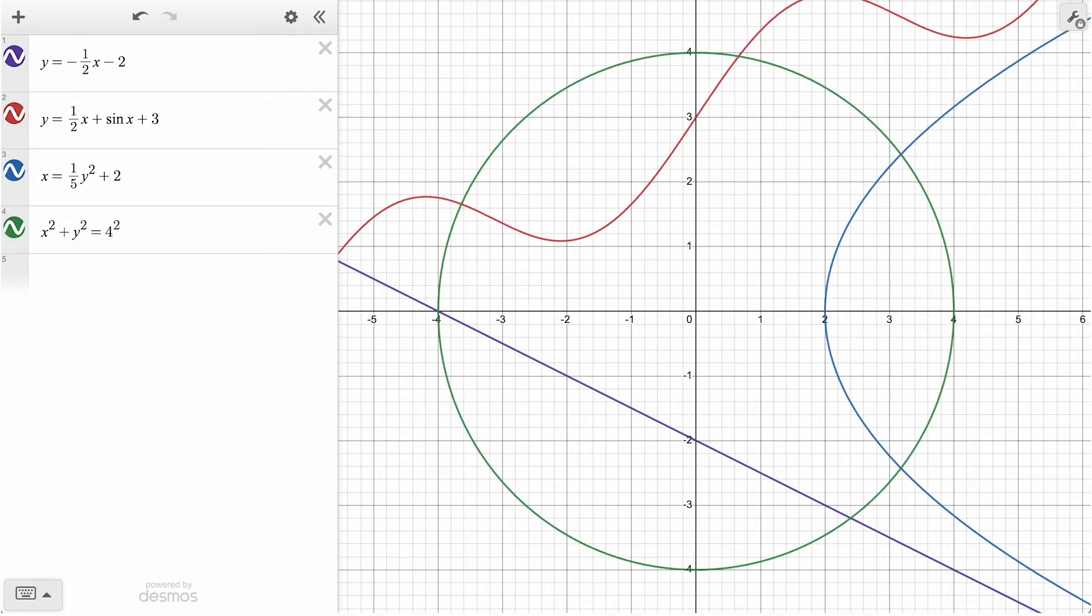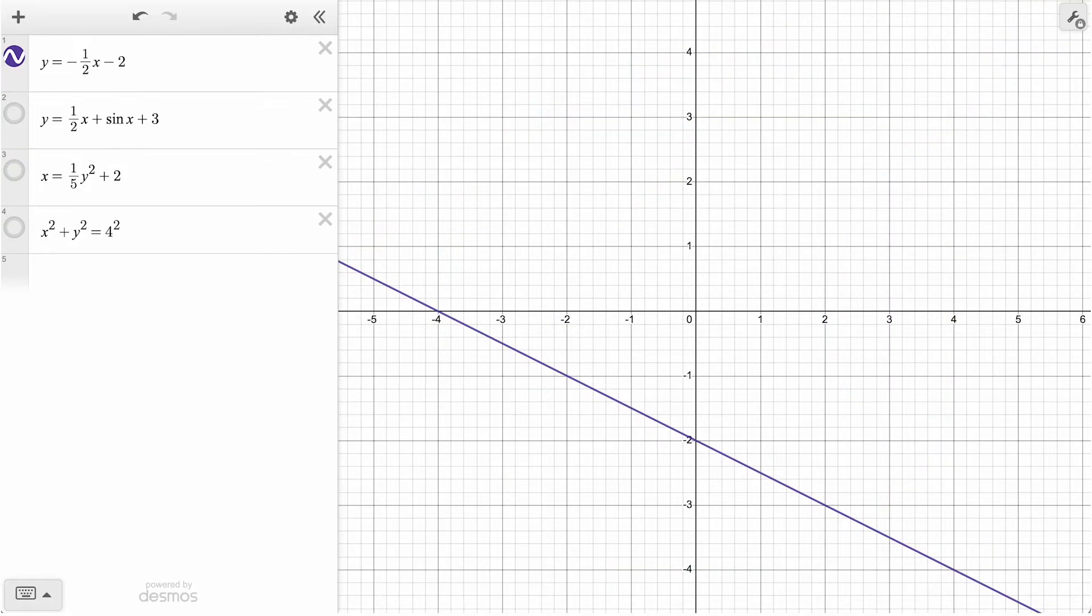We have a few equations graphed here in the 2D graphing calculator, which we will use to represent our strategies. To start, let's focus on this first equation of a line, which is written in slope-intercept form with a slope of negative one-half and a y-intercept of negative two.